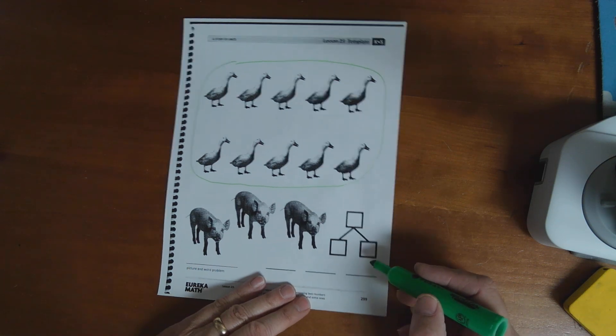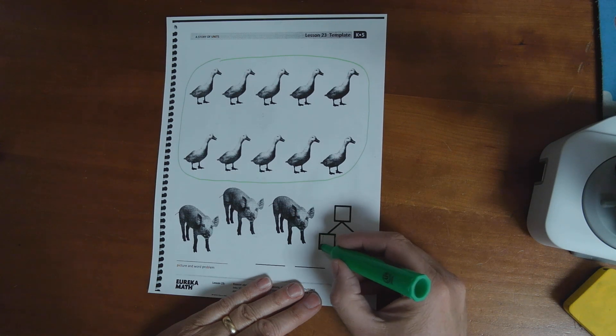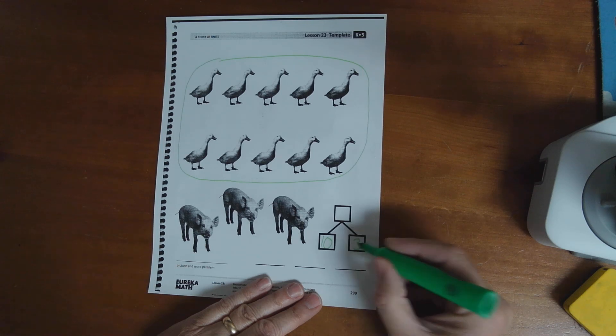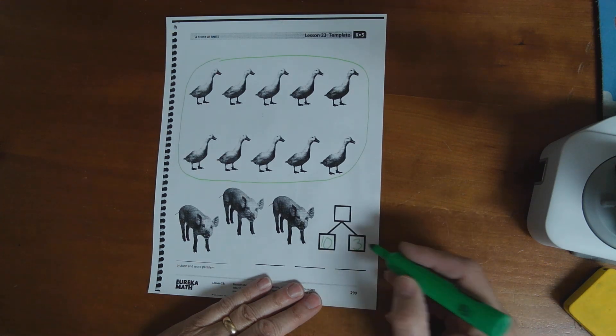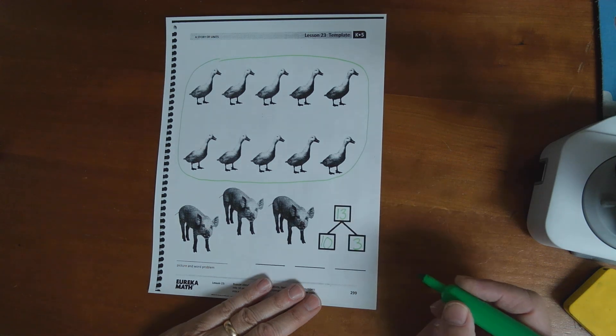Now, look. Here's a number bond for me to do, right? So, one of my parts is 10, 10 ducks. And the other part is 3, 3 pigs. 10 and 3 make up here. I'm going to write 13.